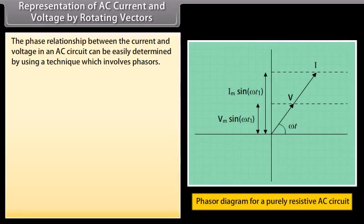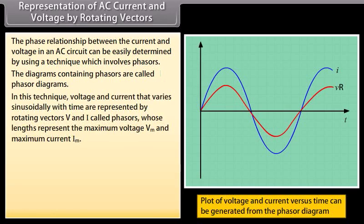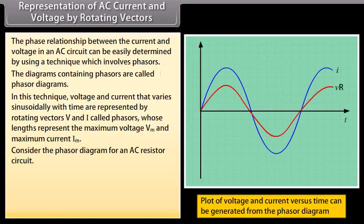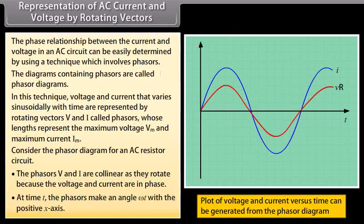Representation of AC current and voltage by rotating vectors: The phase relationship between current and voltage in an AC circuit can be easily determined using phasors. The diagrams containing phasors are called phasor diagrams. Voltage and current that vary sinusoidally with time are represented by rotating vectors V and I called phasors, whose length represents the maximum voltage Vm and maximum current Im. In an AC resistor circuit, phasors V and I are collinear as they rotate because the voltage and current are in phase, making an angle ωt with the positive X-axis at time t.